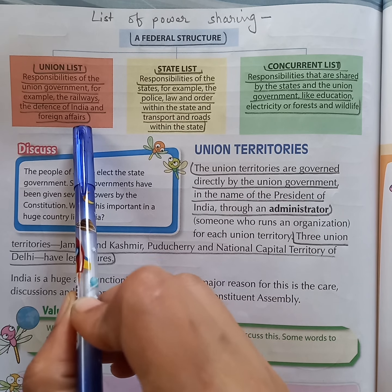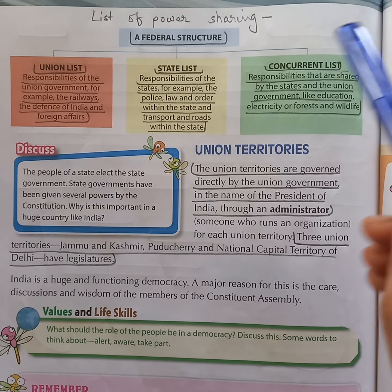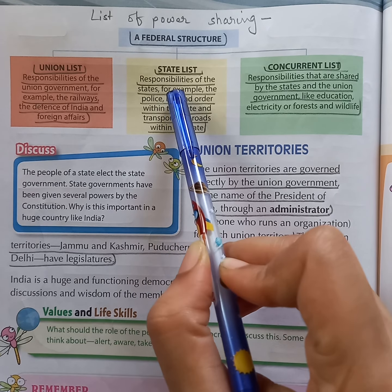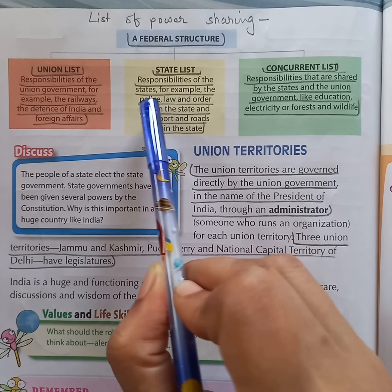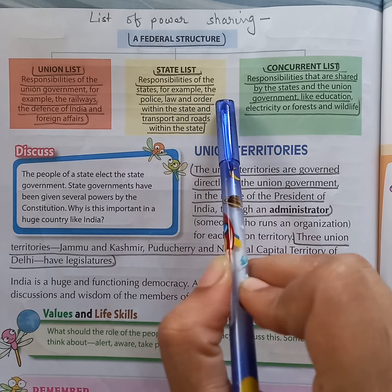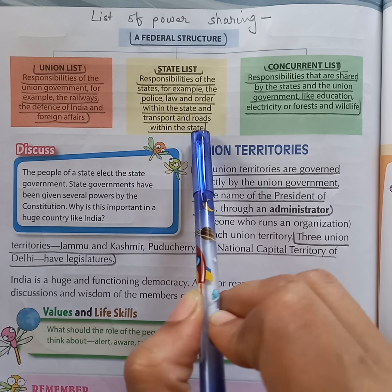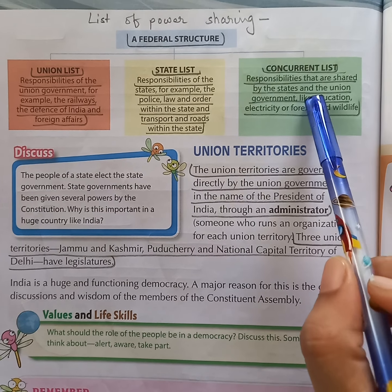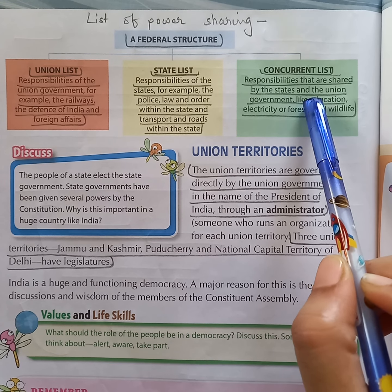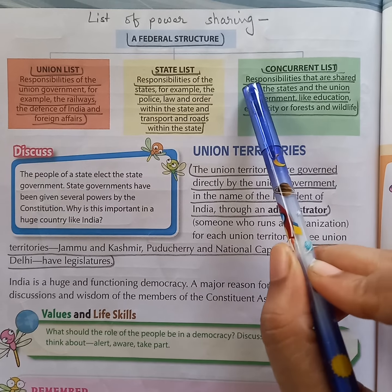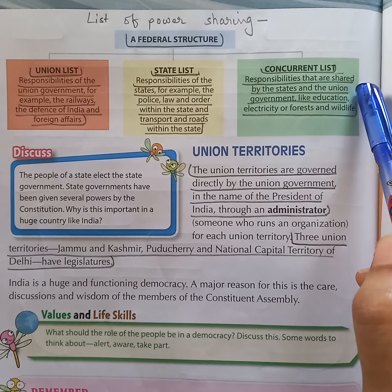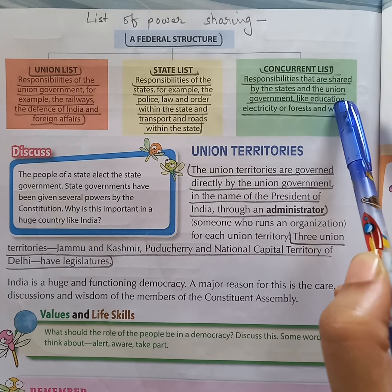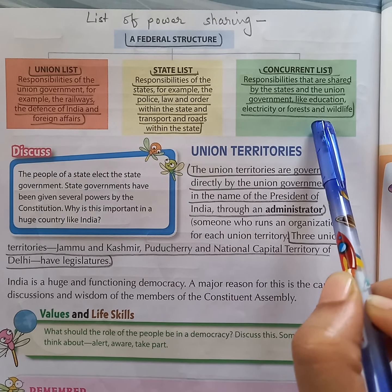Next: what does the State List consist of? Answer: the State List consists of the responsibilities of the state. For example, the Police, Law and Order within the state, and Transport and Roads within the state. What is a Concurrent List? Answer: a Concurrent List is a list that contains the responsibilities shared by the State and the Union Government, such as Education, Electricity, or Forest and Wildlife.